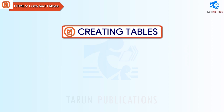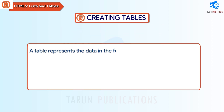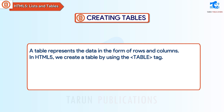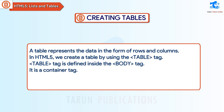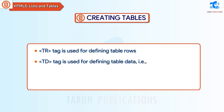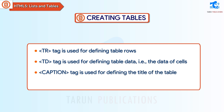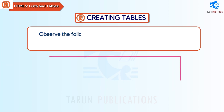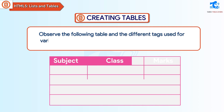Creating Tables. A table represents data in the form of rows and columns. In HTML5, we create a table by using the table tag. The table tag is defined inside the body tag and is a container tag. We can create a table using the following child tags: tr tag is used for defining table rows, td tag is used for defining table data (i.e., the data of cells), caption tag is used for defining the title of the table, and th tag is used for defining table headings.